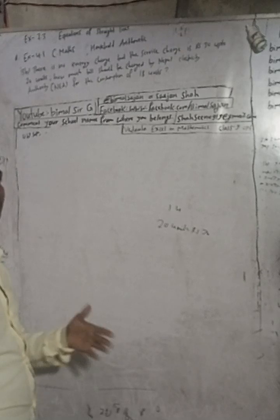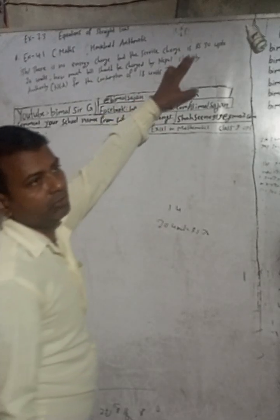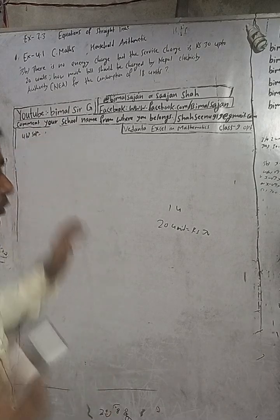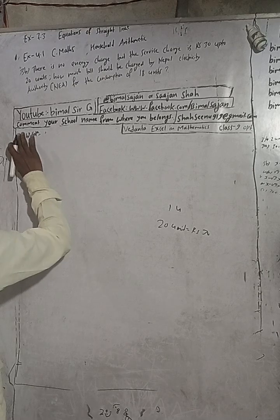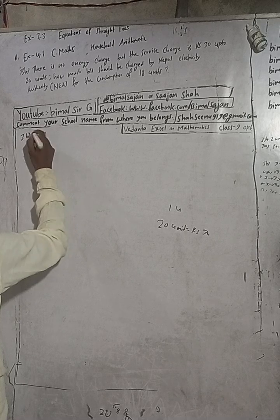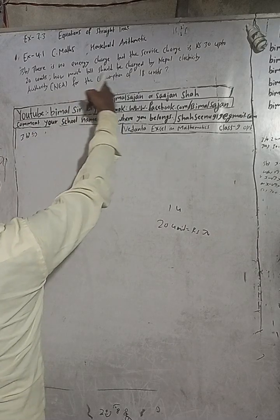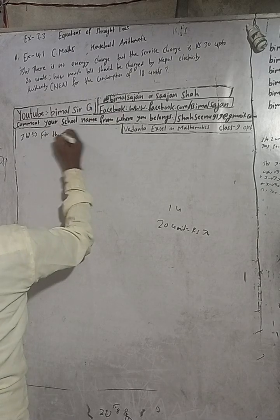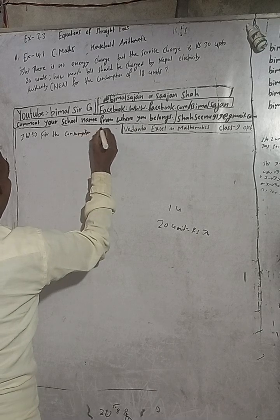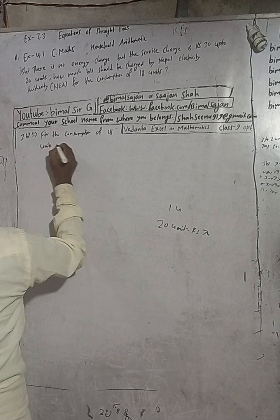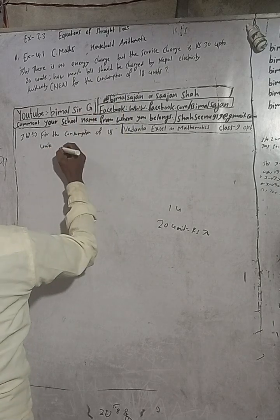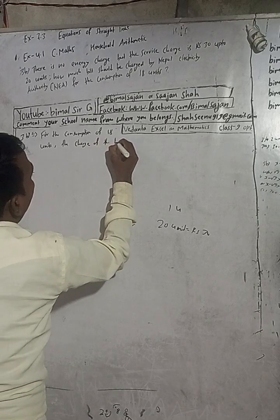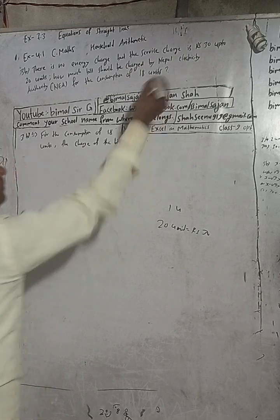3B solution. The service charge is 30 rupees up to 20 units. For the consumption of 18 units, how much bill should be charged? The bill should be charged — the charge of the bill is equal to 30 rupees.